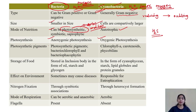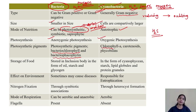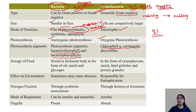Regarding photosynthetic pigments: in bacteria, bacteriochlorophyll or bacteriophycoerythrin is present. But in the case of cyanobacteria, chlorophyll A is present — the pigment that most photosynthetic organisms use. Cyanobacteria also have carotenoids, xanthophylls, and phycobilins. That is why the outer cytoplasm shows coloration.